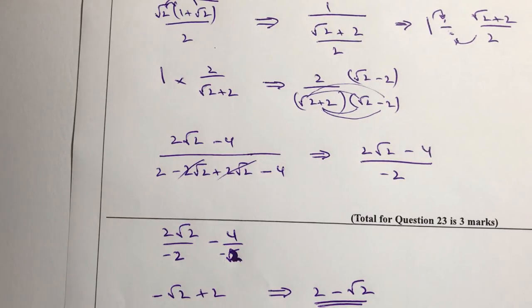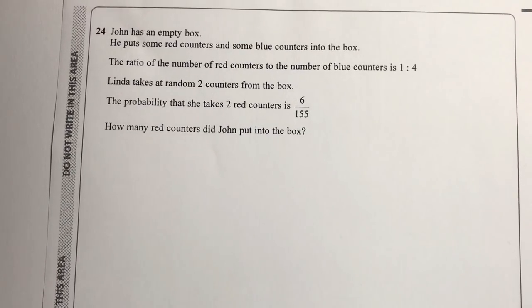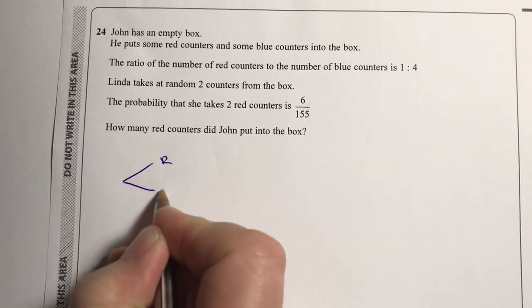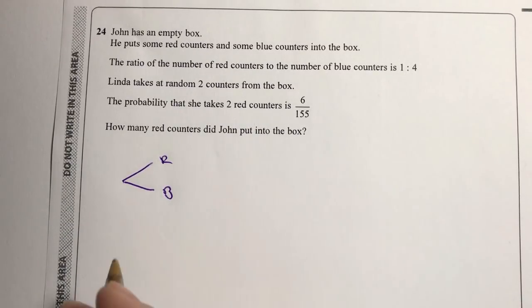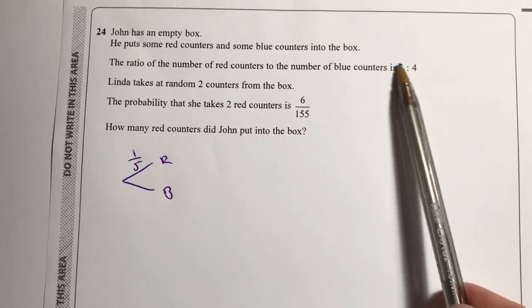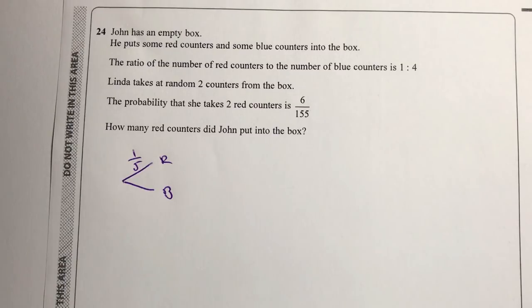Let's move on to question 24, which is the type of question that comes up quite a lot in these papers — in this case it's about probability. A guy has an empty box and puts some red counters and some blue counters into it. One way to approach this is to think about it like a probability tree with red and blue. Because the ratio is 1 to 4, there are 5 counters in total, and 1 out of 5 is red, so the probability of pulling out a red counter first is 1 out of 5.